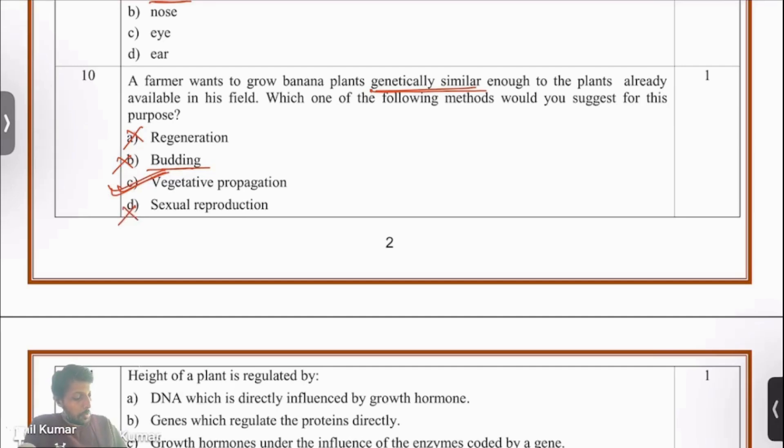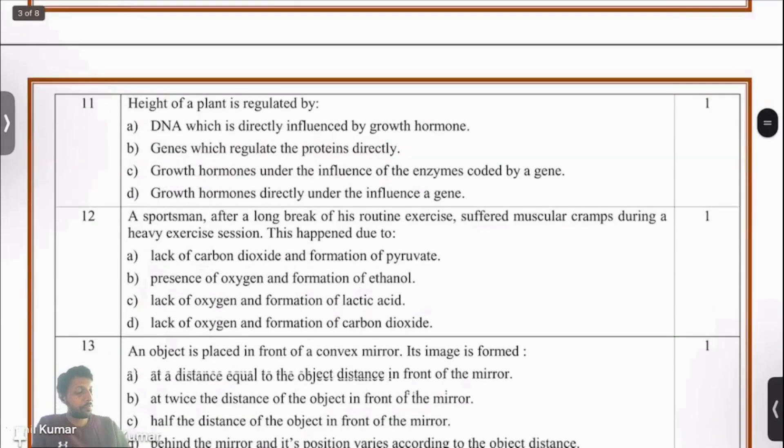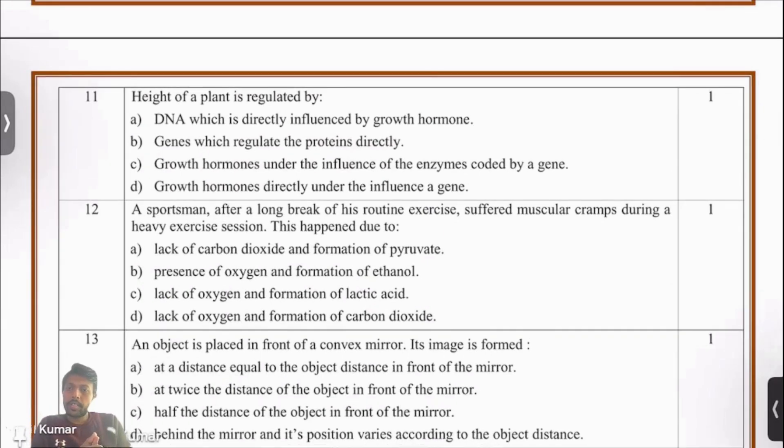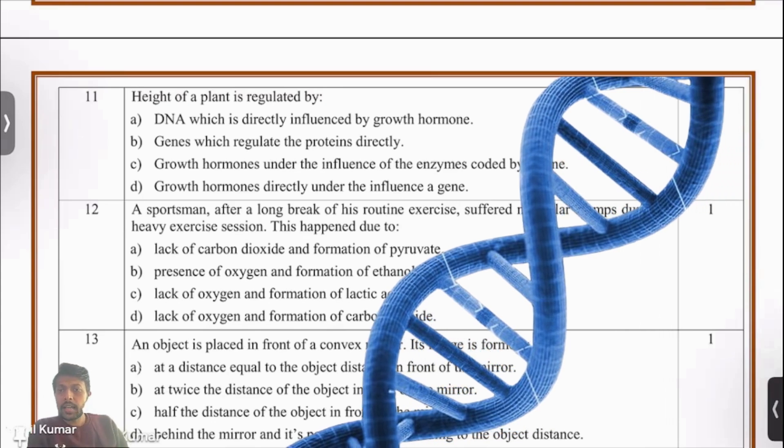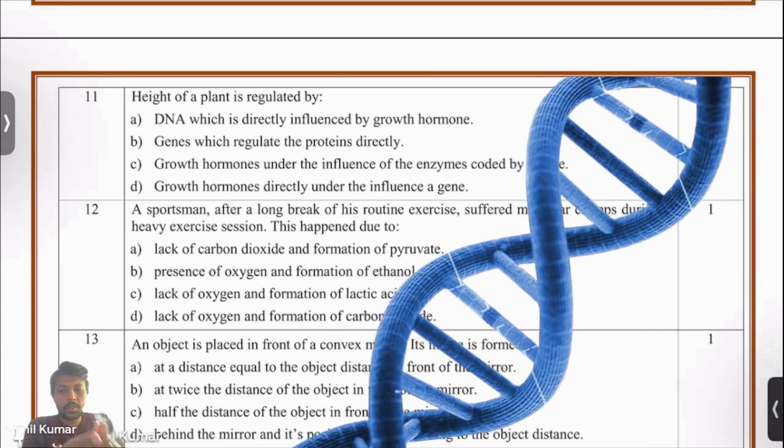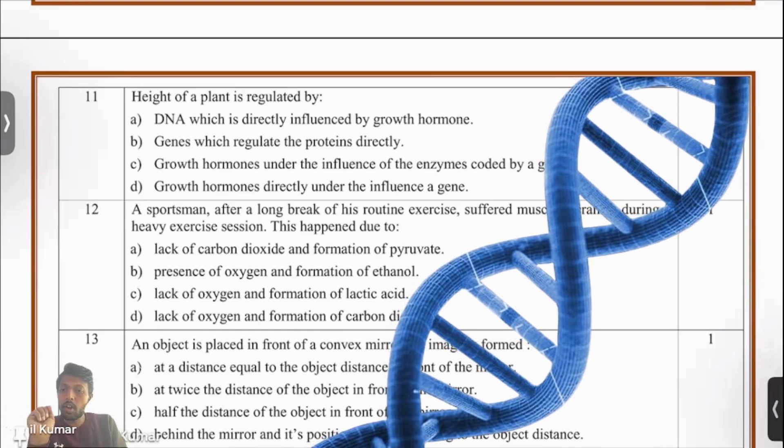Moving on to question number 11. Question 11 says, height of the plant is regulated by which of these four factors? The first thing to note is that whenever you have these attributes like height, these are not directly impacted by the DNA.